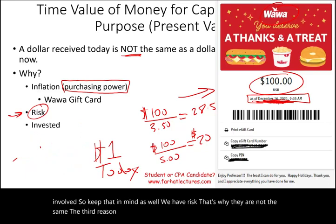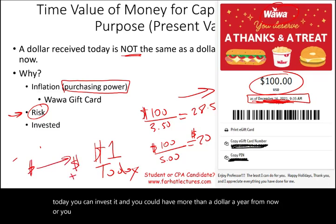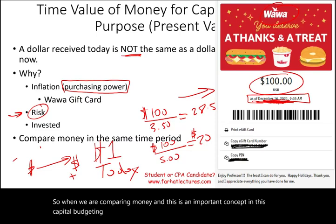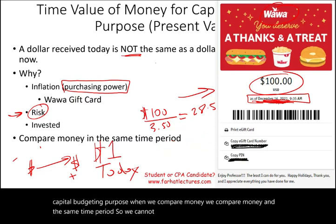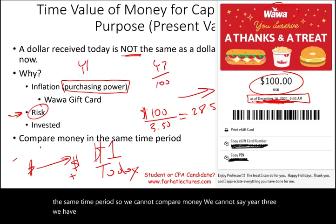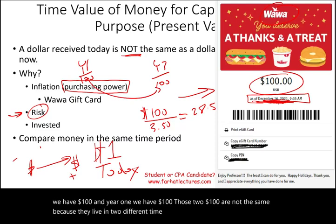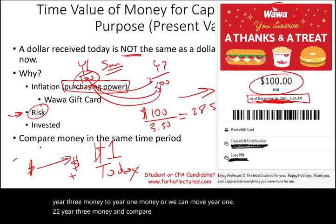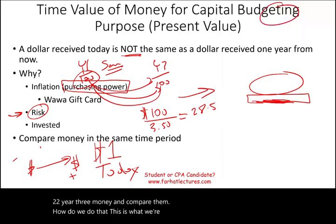The third reason is you can invest this dollar. If someone gave you $1 today, you can invest it, and you could have more than $1 a year from now. The point is you can invest this money. When we are comparing money — and this is an important concept in capital budgeting — we compare money in the same time period. We cannot say year three we have $100 and year one we have $100; those two $100 are not the same because they live in two different time periods. We have to bring them to the same time period, bringing year three to year one, and now we can compare them. This is what we're going to be learning: the concept of time value of money.